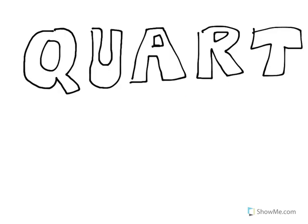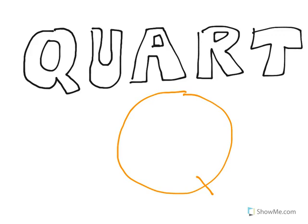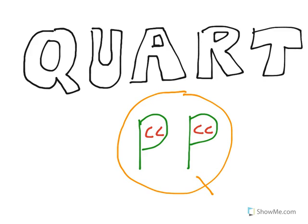The next one we have is a quart. I'm going to draw a quart in orange — a big Q for quart. We know that there are two pints in every quart, so we're going to draw two P's inside. And because there are two cups in a pint, we're going to put two C's inside each of the P's. So you can see that in a quart there are two pints, but there are also four cups.